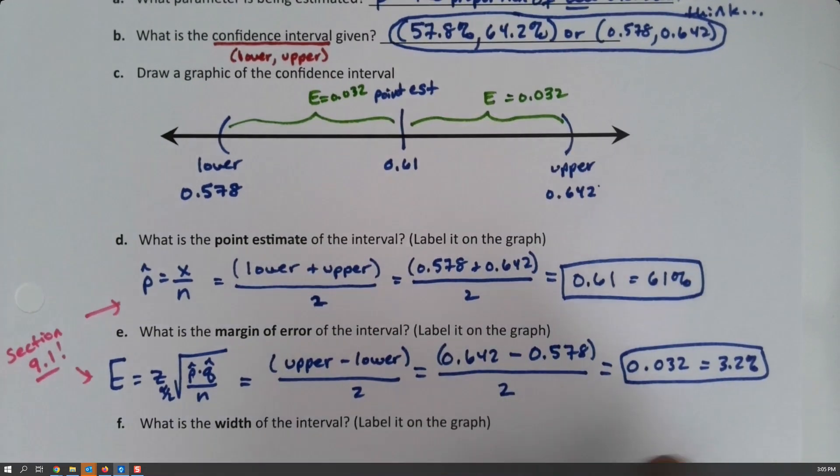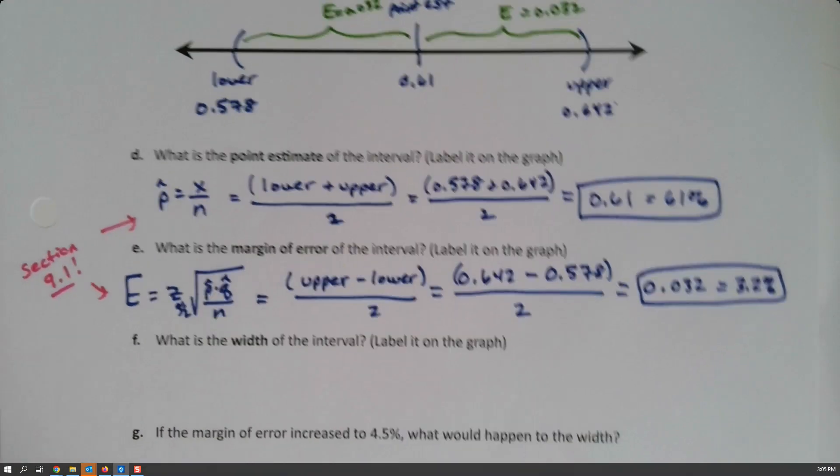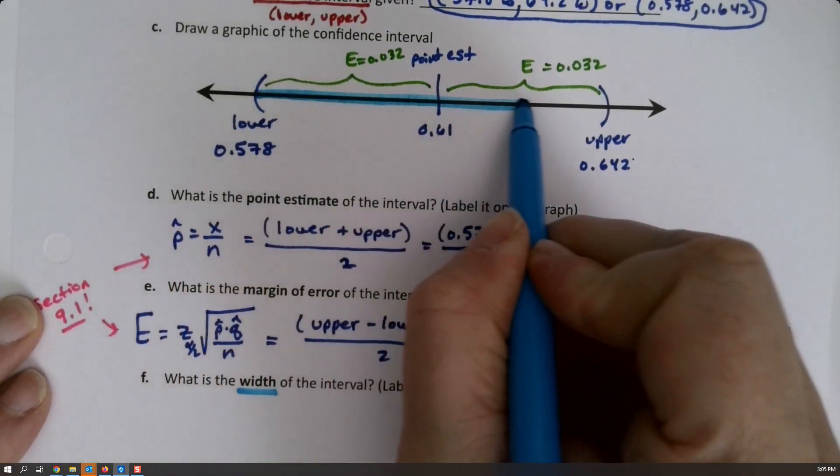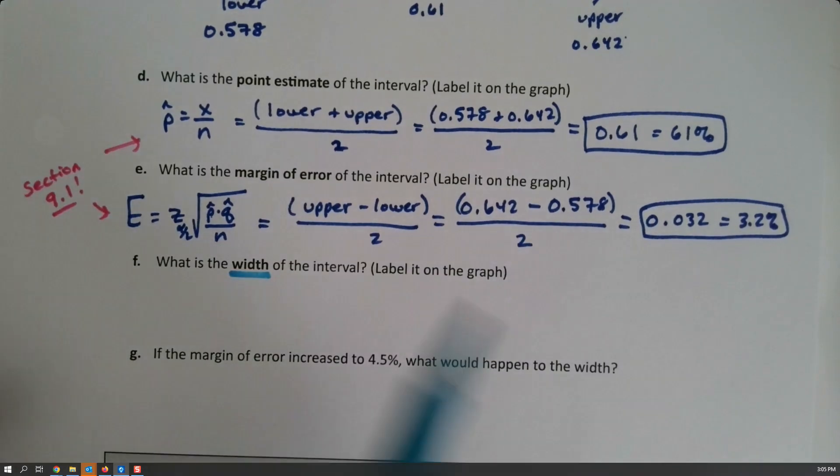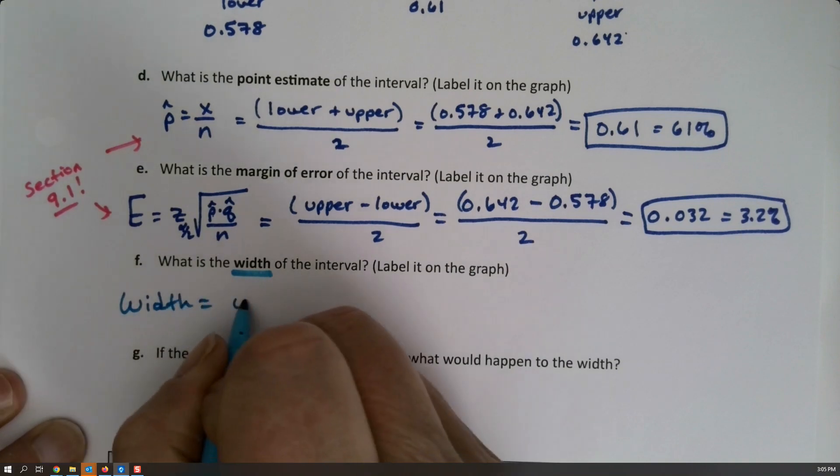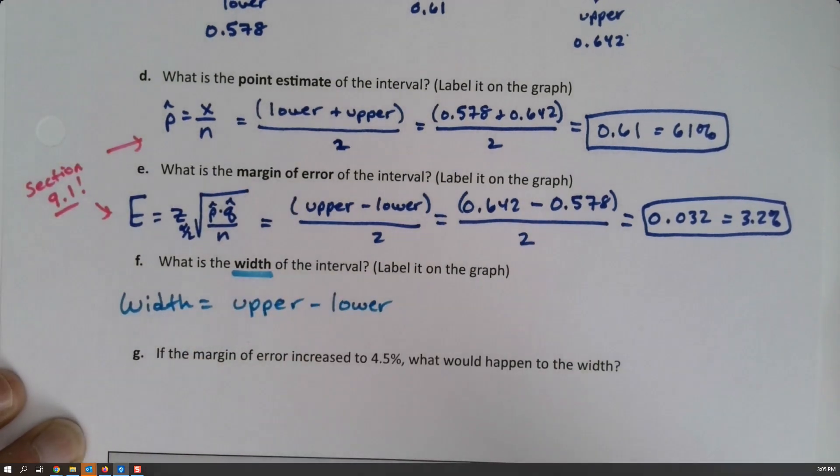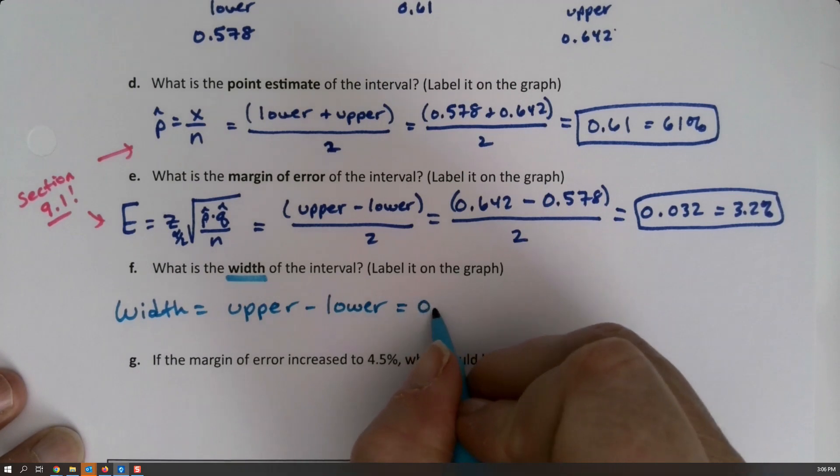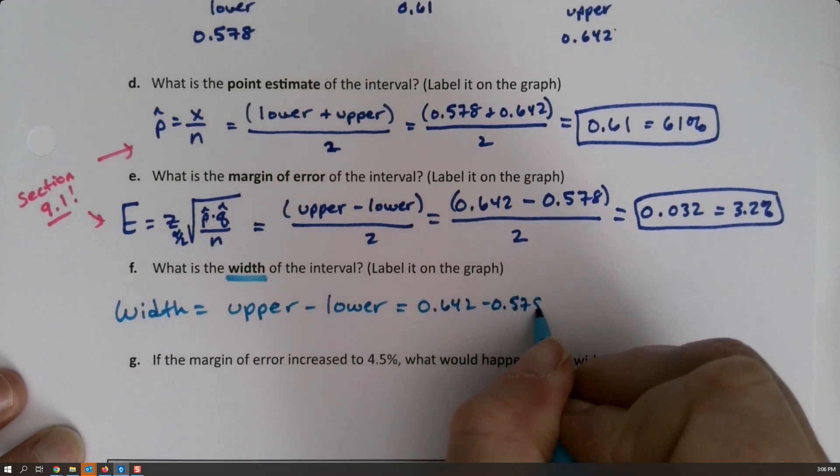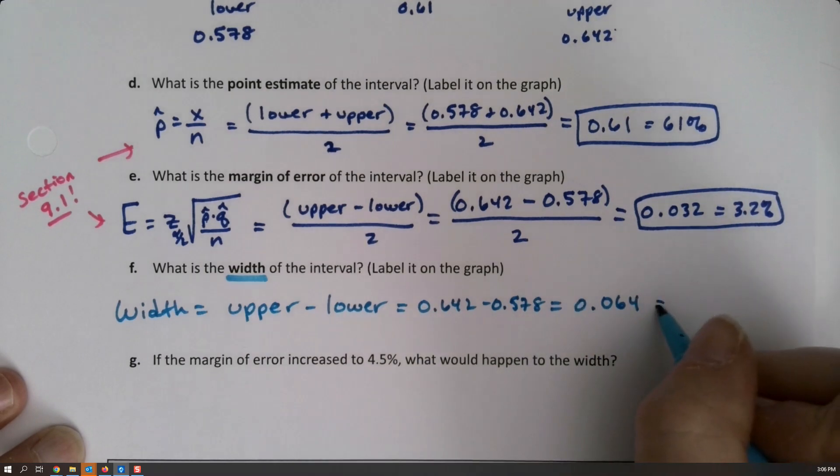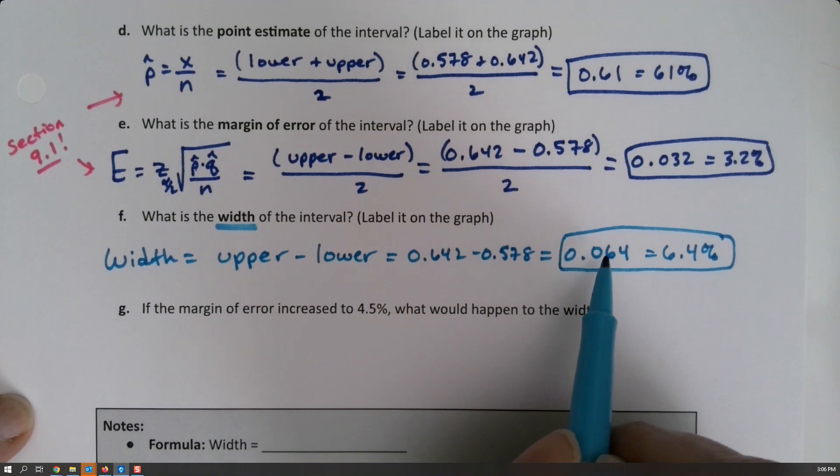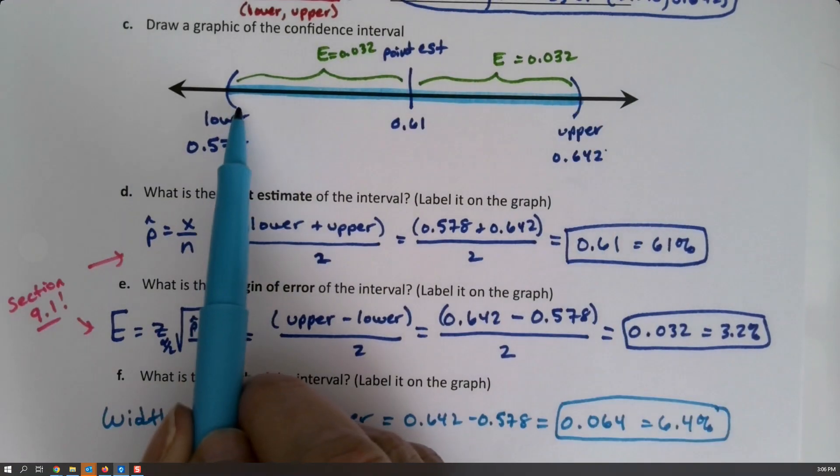And two of them together make the width of the interval. The width of the interval is the next question. So the width is the distance from the lower to the upper, so it's actually the upper minus the lower. It's not divided by two, it's this distance from here to here, so it's two of those errors. So it's 0.642 take away 0.578, which is 0.064, or if you will 6.4 percent. That's the width, right? Two of the errors. So notice if I took my error and I multiplied by two, I would get that, because it's this number minus that number. The error is just half of that.